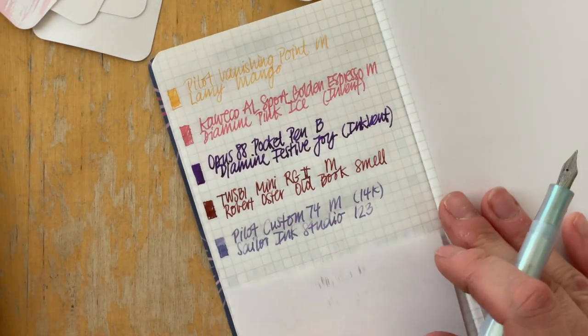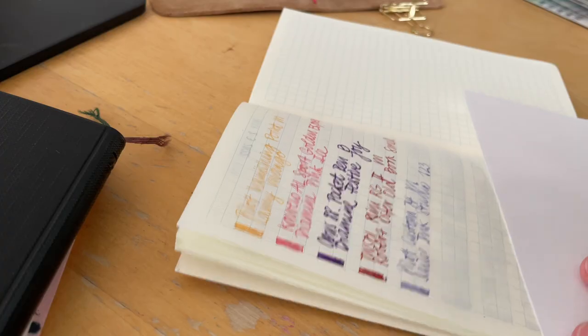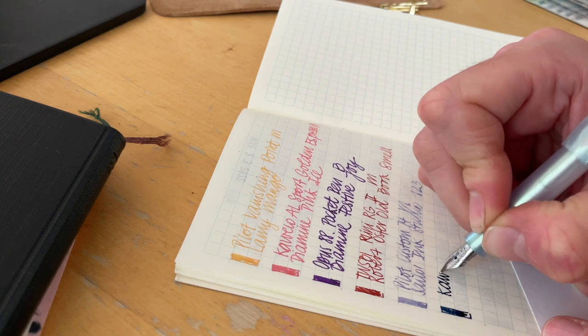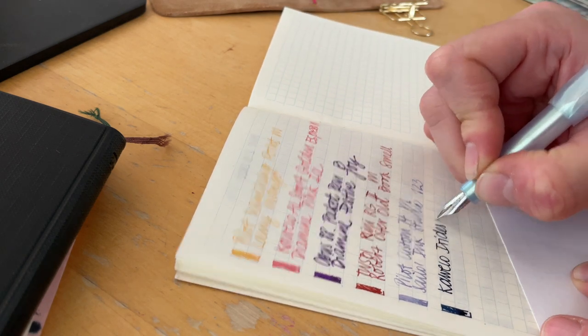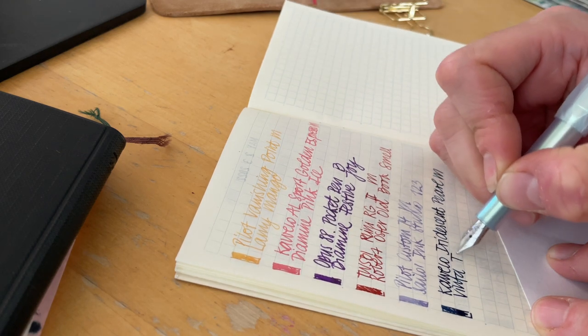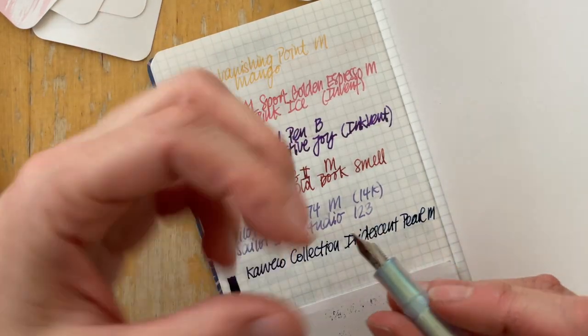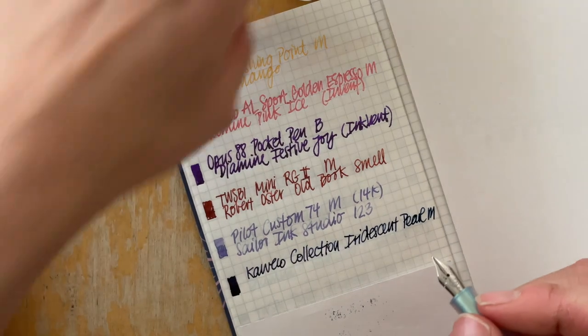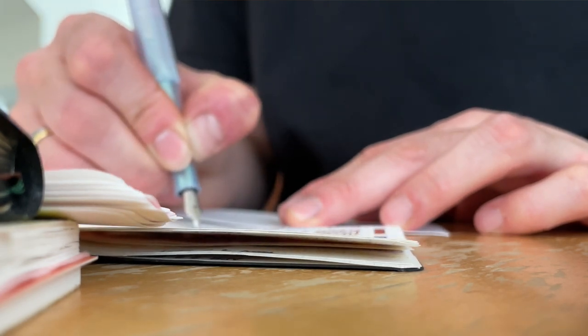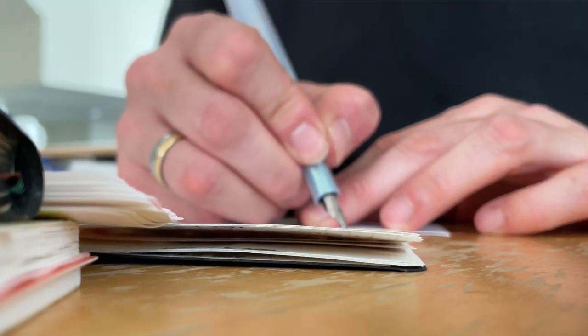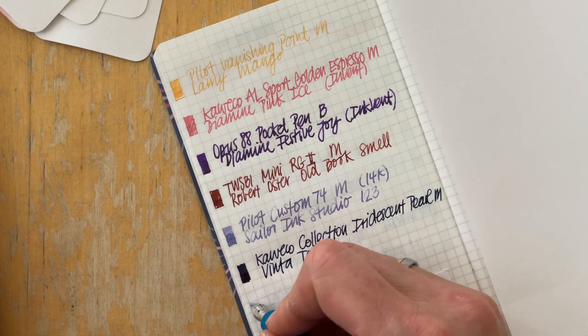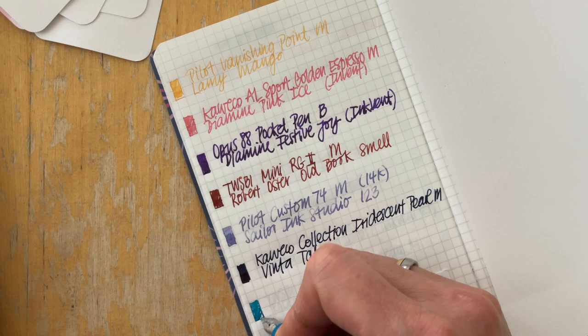Then let's move on to the Kaweco. Definitely visible with all of the pens when I don't write with them very often. Kaweco collection iridescent pearl. Is that the ink? There will be water evaporating and the ink appears a lot darker than it appears on the sample as you can see. So yeah, that's another thing that helps encourage me to write and use those pens more than I have.